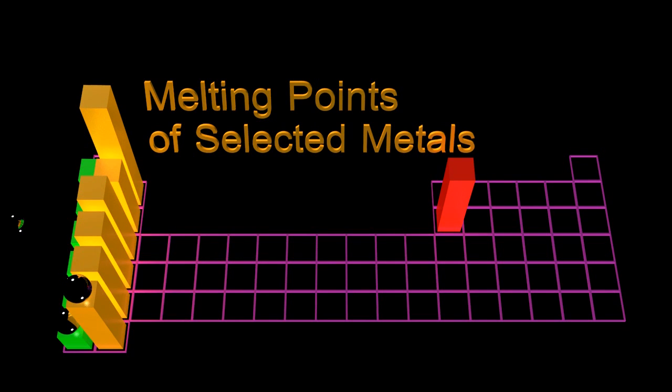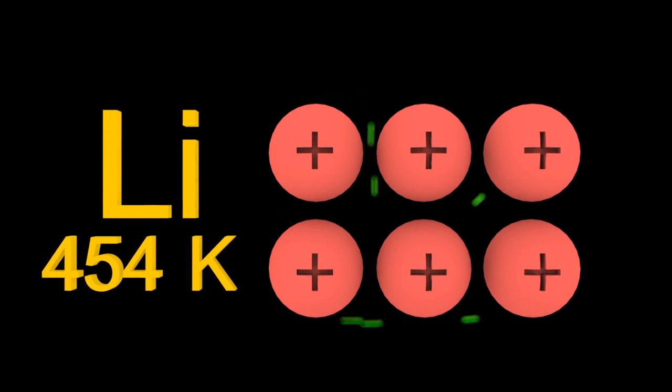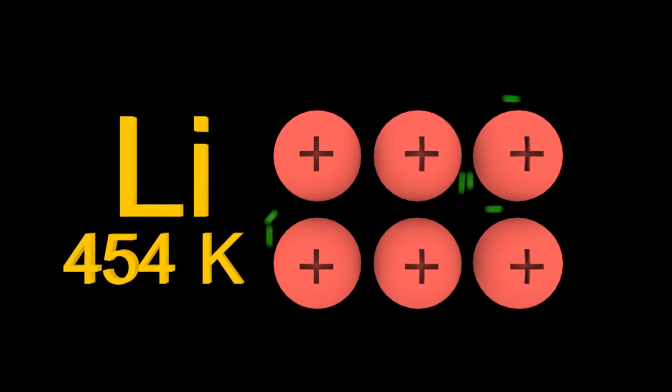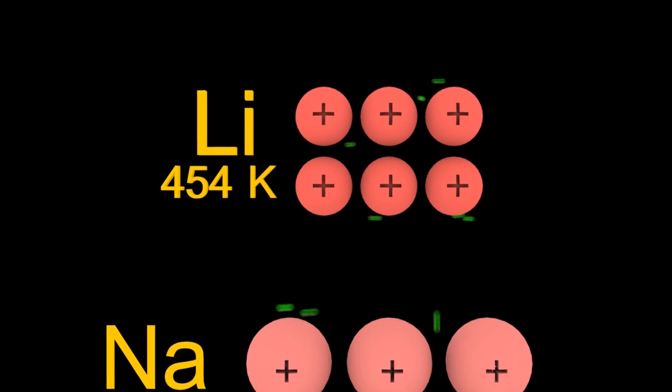But as you go across Period 3, the melting point increases, so those metallic bonds must be getting stronger. The positive lithium ions are attracted to those electrons in the sea of electrons—delocalised electrons—and that's an electrostatic attraction, a metallic bond.